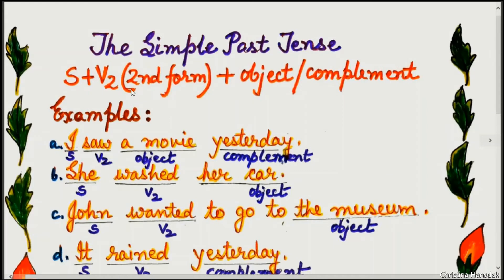The formula for the simple past tense is: Subject + V2 (i.e. second form of the verb) + object or complement.